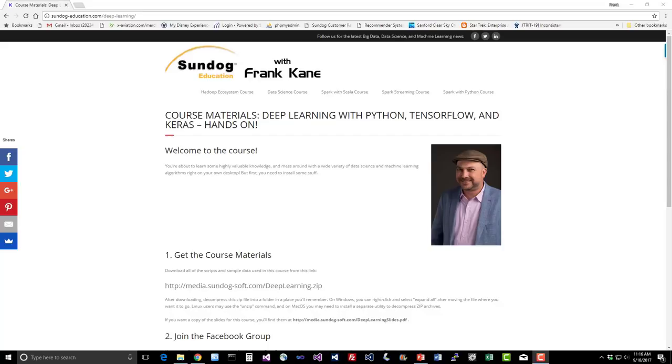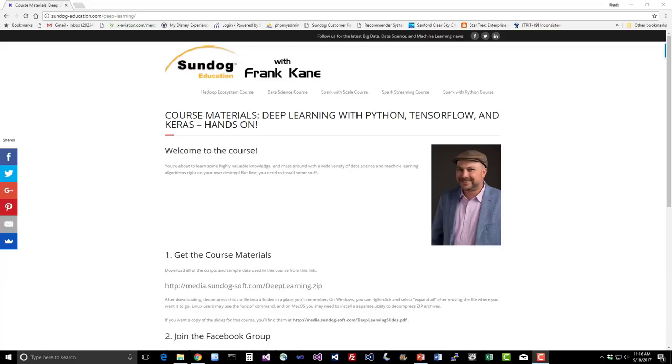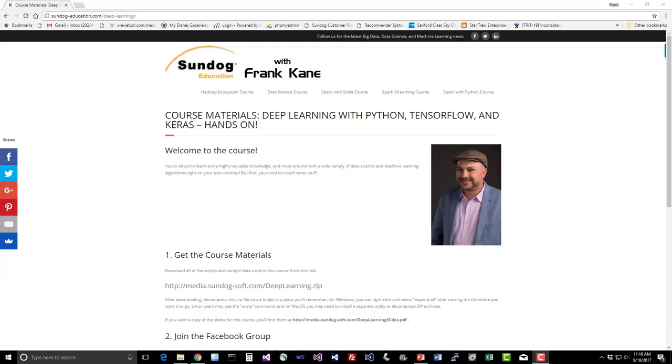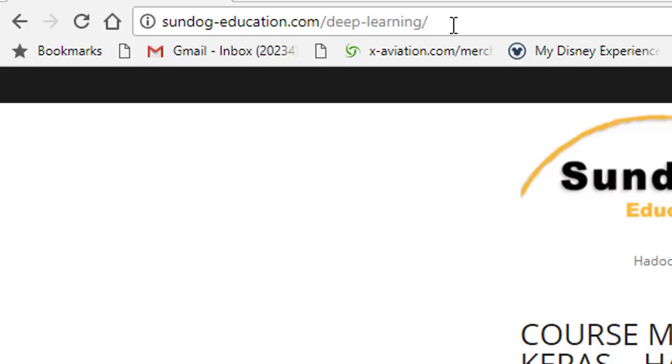So first things first, let's do some housekeeping. Some of you may be taking this section on deep learning and neural networks out of context from the larger data science and machine learning course that it's a part of. Maybe you just skipped ahead to this section or maybe you're getting it on YouTube or something like that. If so, this is how to get the course materials that you need for this section of the course.